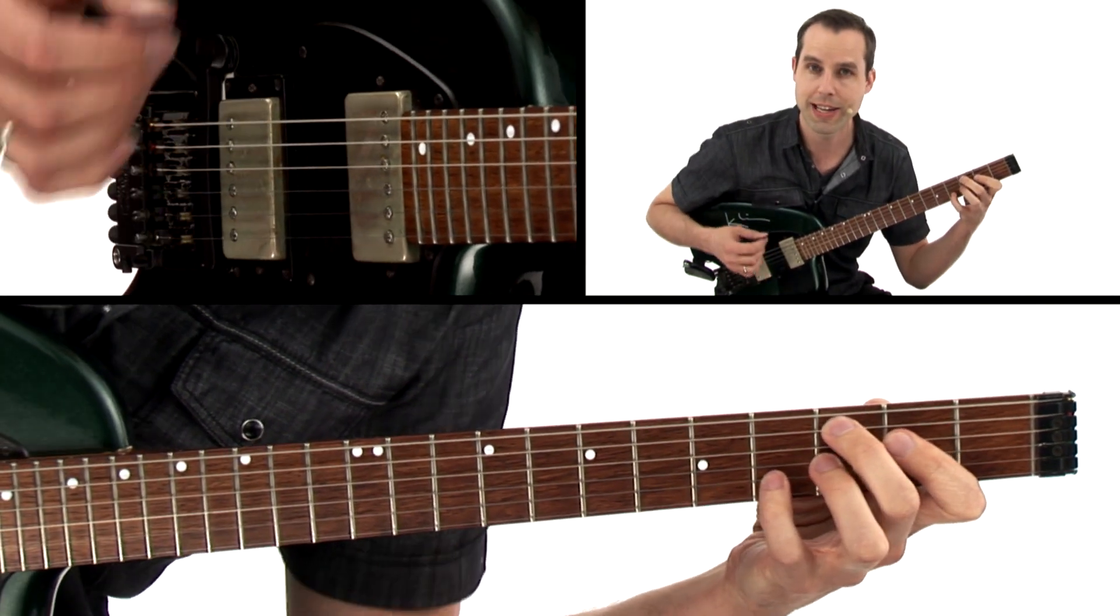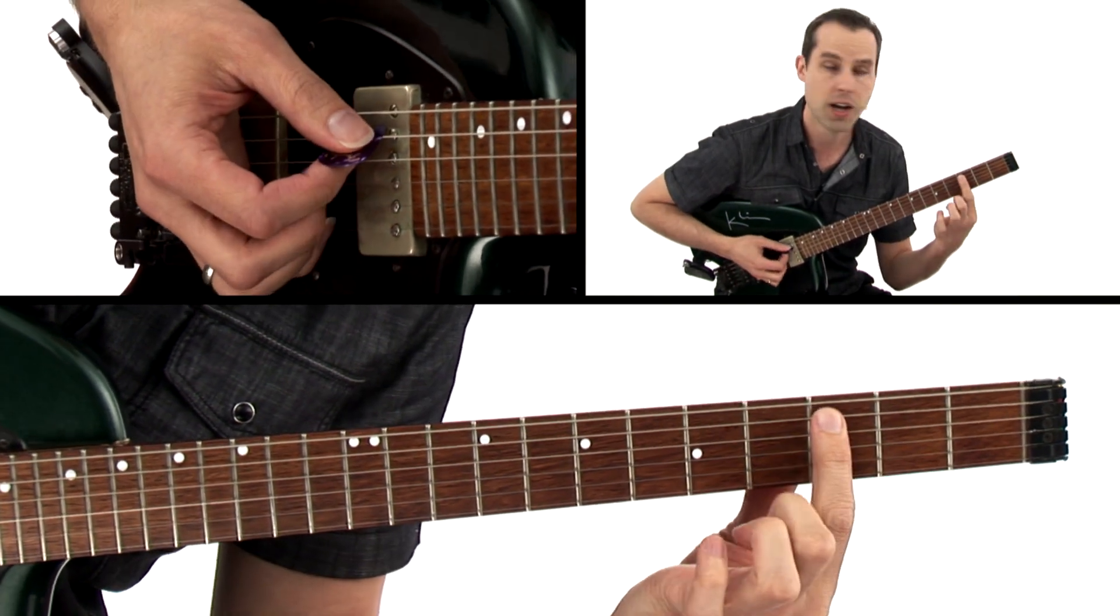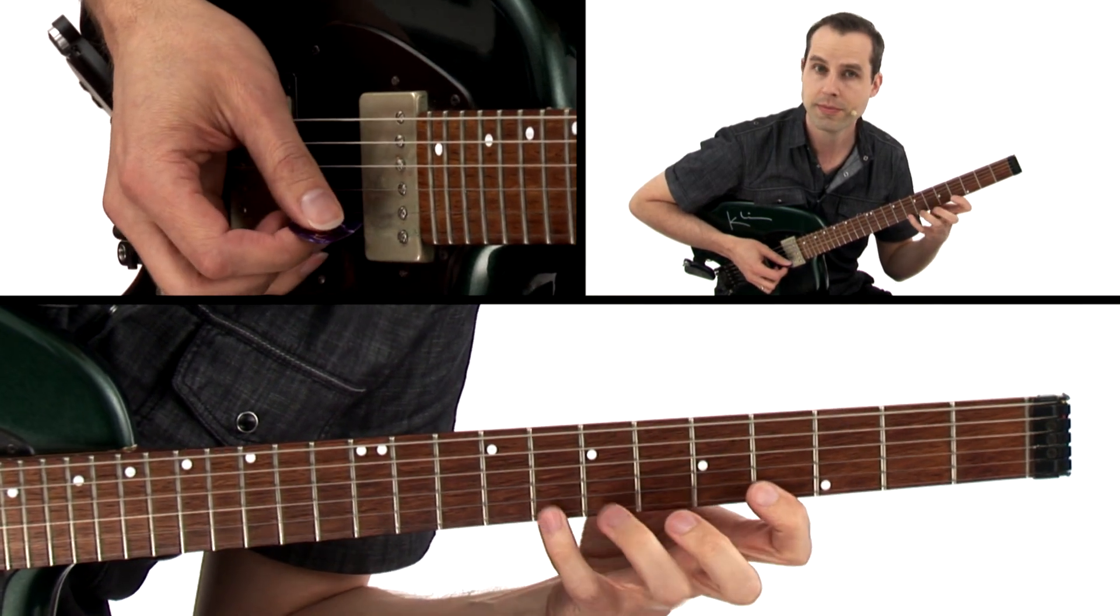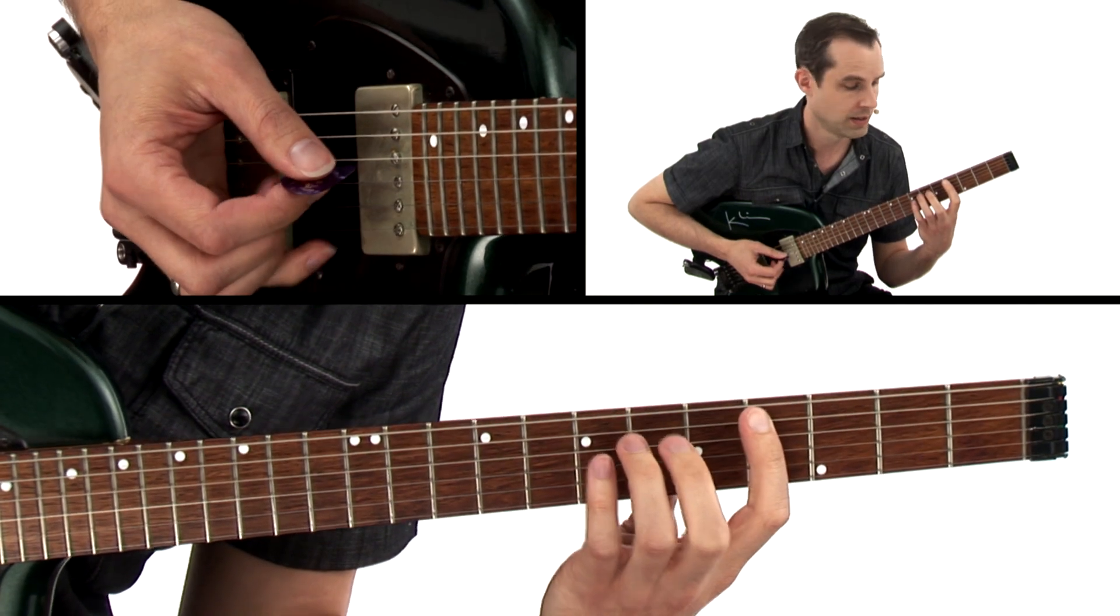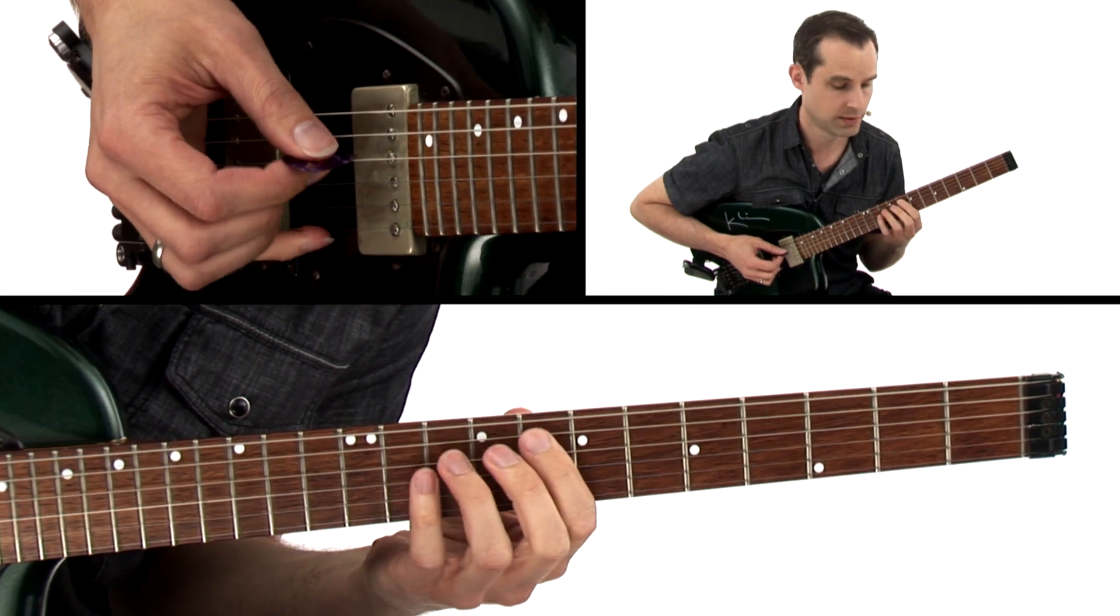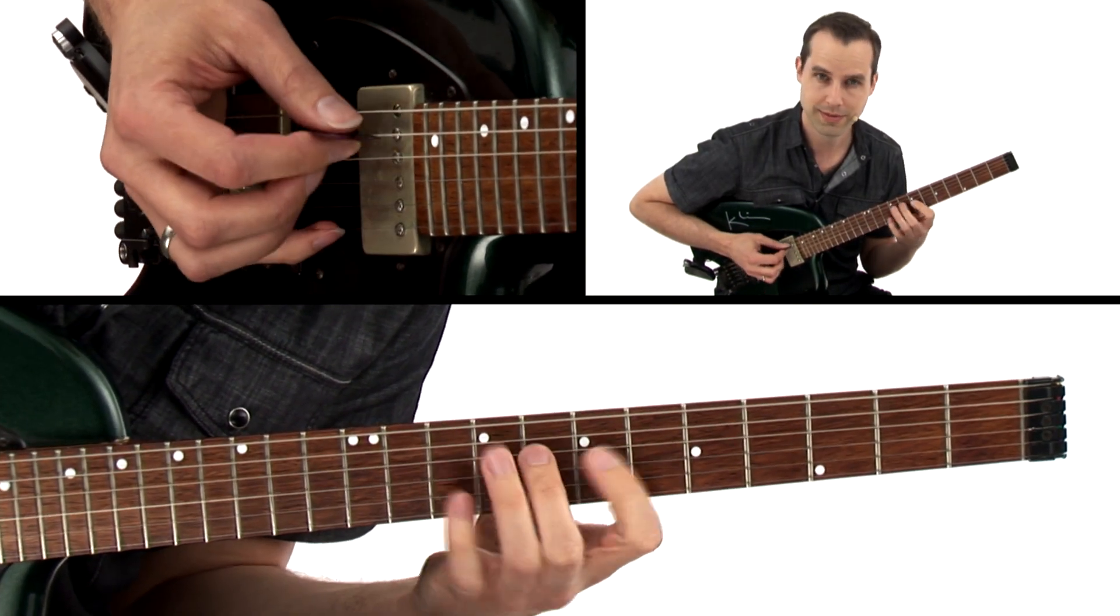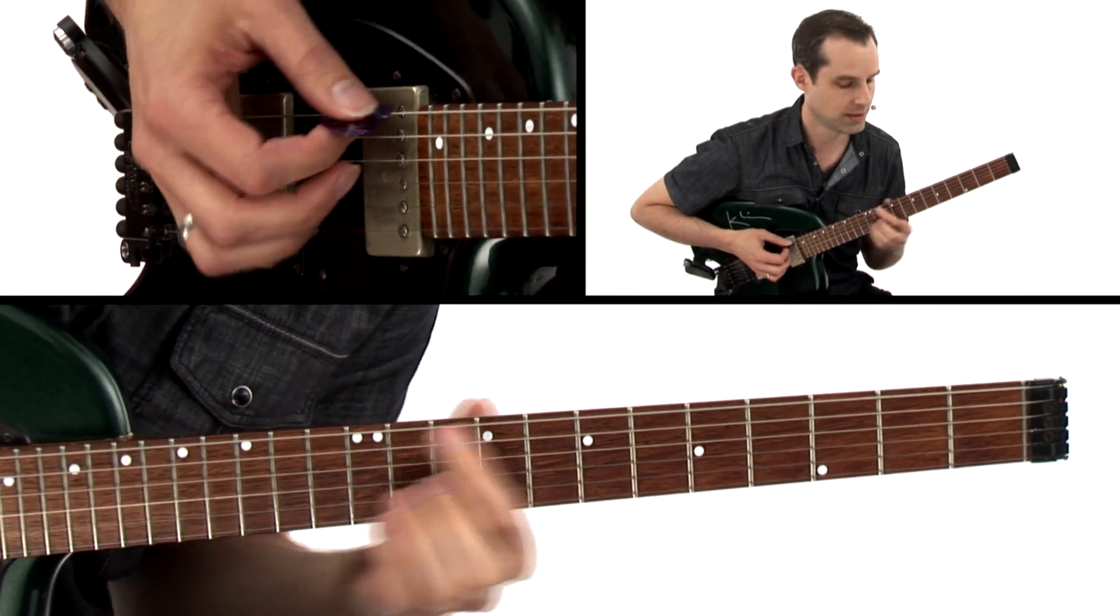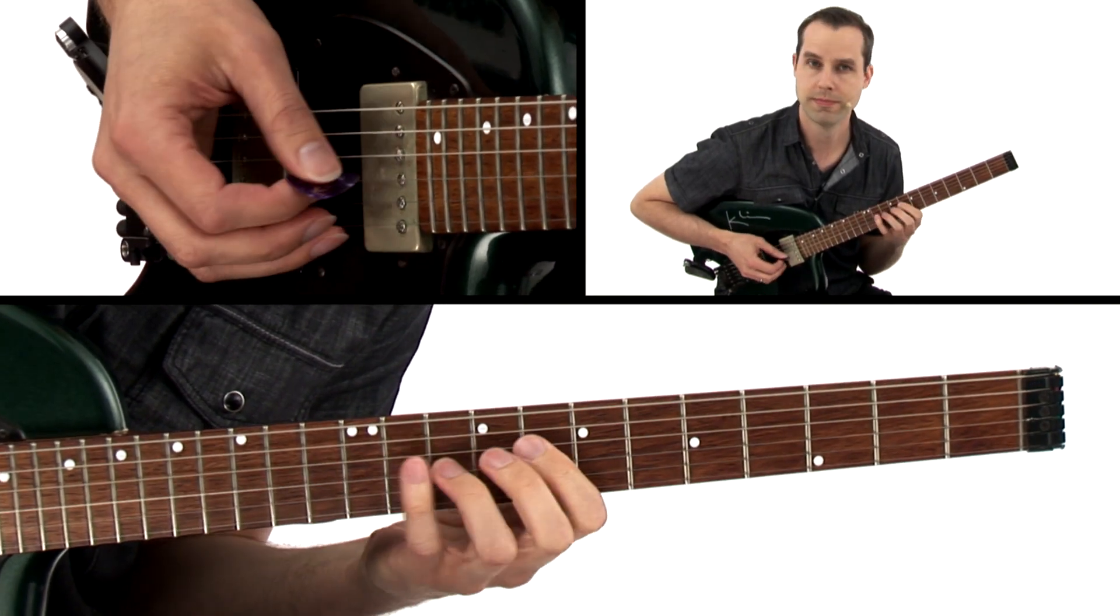Then we have a C7. Again, the sharp-9, so we're going to use that same device that we talked about earlier. Go up a half-step and play a minor-major-7. Then to our F7. D7. G-minor. C7 altered. F.